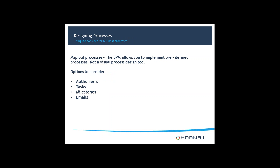There are many things to consider when designing a business process. The business process module allows you to implement predefined processes. Please note that it is not a visual design tool like draw.io or Visual Studio. Before you even consider implementing a business process, we recommend that a step-by-step instruction or workflow is designed beforehand. Some of the main things to consider include the ability to add authorisers, activities, milestones, and perhaps email triggers at certain scenarios. Please include them in your workflow if applicable.